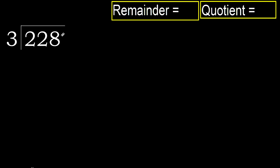228 divided by 3. 2 is less, therefore next. 22 is not less, therefore with 22: 3 multiplied by which number is nearest to 22 but not greater?